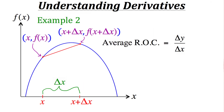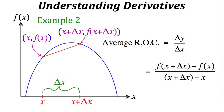Now with those two points let's calculate the average rate of change: delta y over delta x. Delta y is the change between our two output values: f(x + delta x) minus f(x). That's over the change in x — the difference between our two input values: (x + delta x) minus x. The positive x and negative x in the denominator cancel out, leaving us with the simplified formula: f(x + delta x) minus f(x), all over delta x.